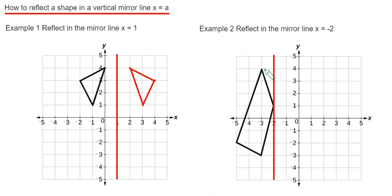So again, if we count how many squares each corner is to the mirror line, it will be the same on the other side. Let's start with the top corner, so that is 1, so it's 1 on the other side. This point here will stay in the same place.